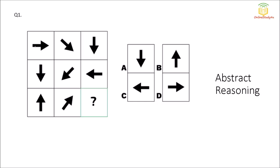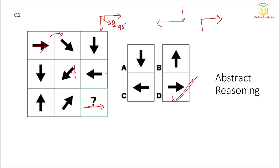Last question: which figure will come next? We have an arrow rotating clockwise 45 degrees, then again clockwise 45 degrees — so it takes two turns of 45 degrees each, making 90 degrees total. On the right side, again 45 degrees then another 45 degrees, totaling 90 degrees. So the next position is 90 degrees to the right — option D is the correct answer.